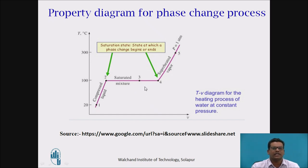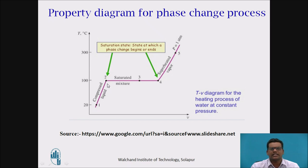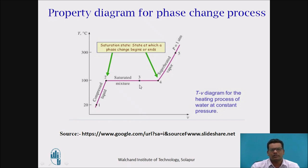Now we introduce the term dryness fraction — it is the ratio of steam molecules present in the mixture to the total molecules available in the mixture. At point 2, all molecules are in liquid state, so the dryness fraction x = 0. At point 3, suppose 40 out of 100 molecules are in vapor and 60 are in liquid: dryness fraction = 40 / (40 + 60) = 0.4. At point 4, all molecules are in vapor state, so x = 100/100 = 1.